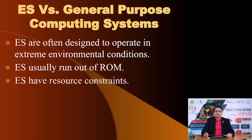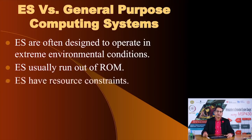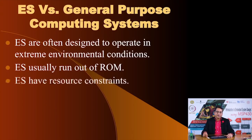Another difference is that embedded systems have resource constraints. Resources include computational capability and communication interfaces. A general purpose computer like a laptop has ethernet, Wi-Fi, FireWire, USB, and more. But does your microwave oven have an ethernet connection or Bluetooth control? Most probably not. Embedded systems have only the connectivity required for their specific function, not as a feature to boast about.